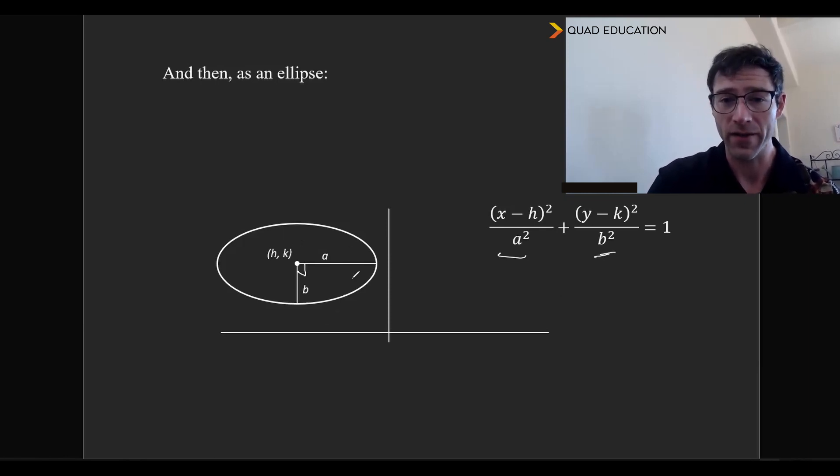And then b, the minor axis, is the denominator for the y-axis. And if we were to take a rough estimate of what this looks like here, probably let's say this is like three for the major axis, three units long. Let's say then that the b is like two units long.